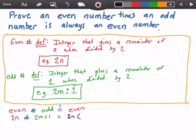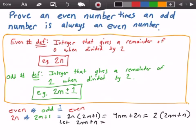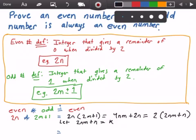Rewriting: 2n times 2m plus 1 equals 4nm plus 2n. What we can do is factor out a 2, and we get 2 times the quantity nm plus n. Now if we let nm plus n equal some arbitrary integer k, then we get our equation 2 times k, which is exactly what we wanted — an even number.